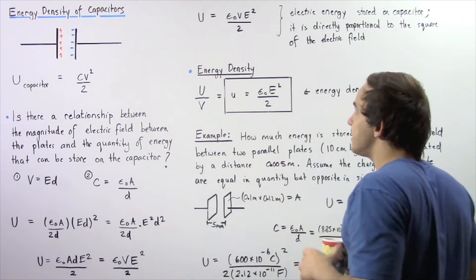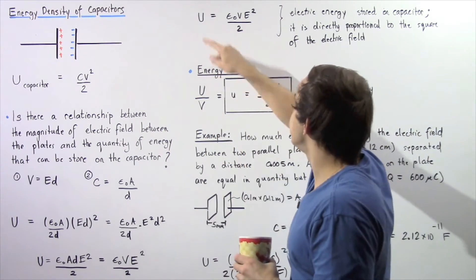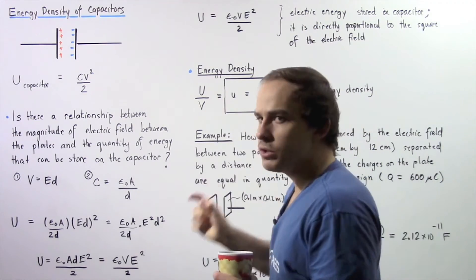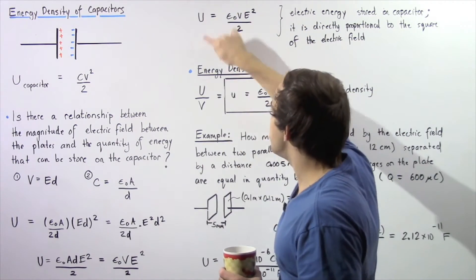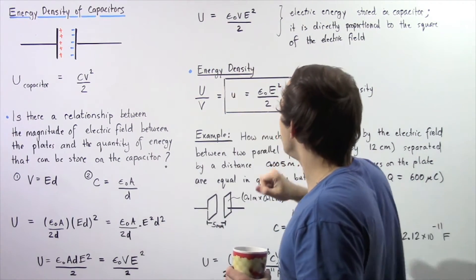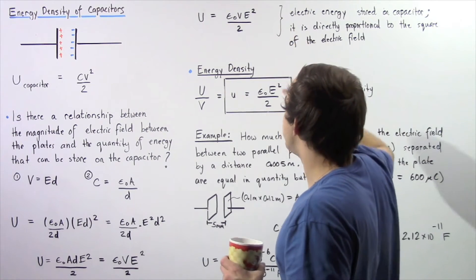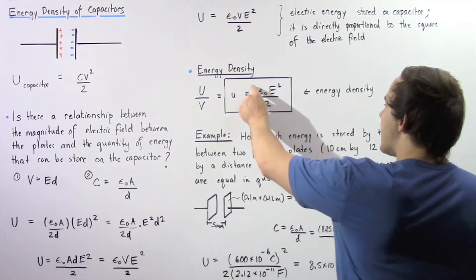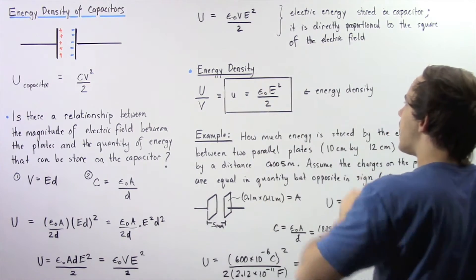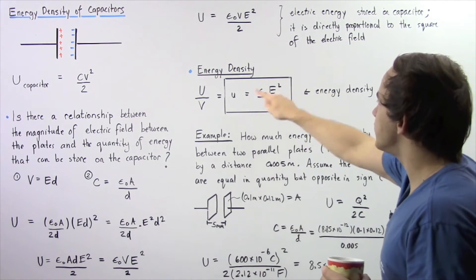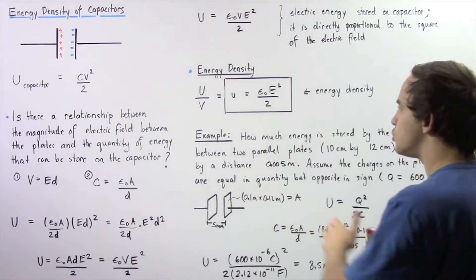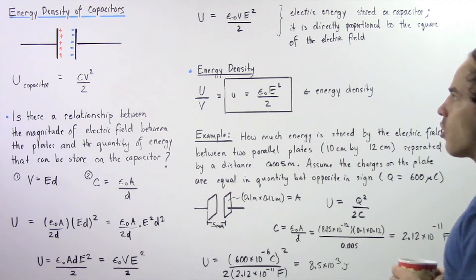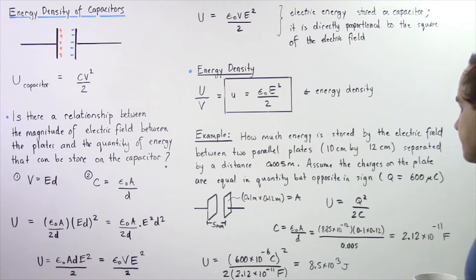The energy density is simply the quantity of electric energy per unit volume. We divide the energy expression by volume, the volume terms cancel, and we're left with epsilon naught multiplied by E squared divided by 2, which equals lowercase u — our energy density.